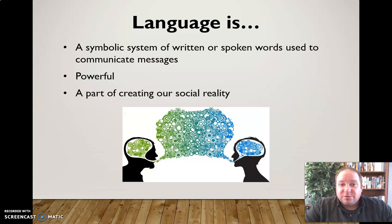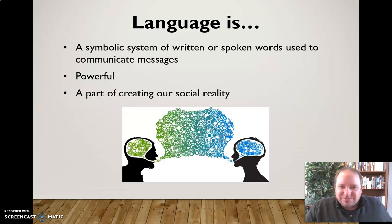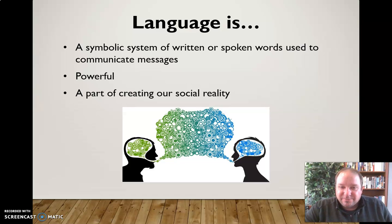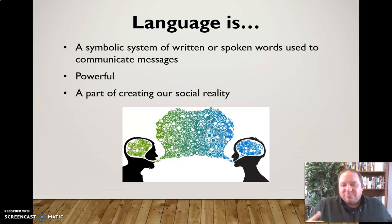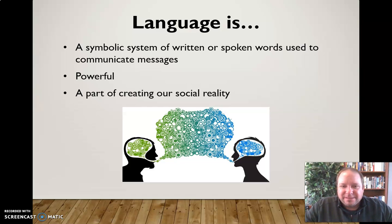Language is also a part of creating our social reality. We can define somebody — for example, their age — by what type of language they use. What kind of slang are they using? Are they a part of this group or that group? Not just are they speaking English or Chinese, but what words are they using? Are they using contemporary slang, meaning they're young and hip, or slightly older expressions? Language also creates our social reality and determines what's good and what's bad through common language use.